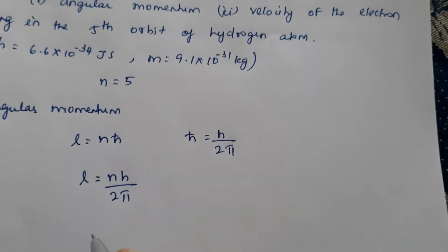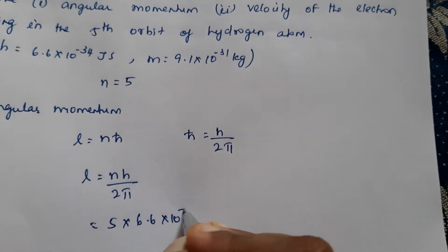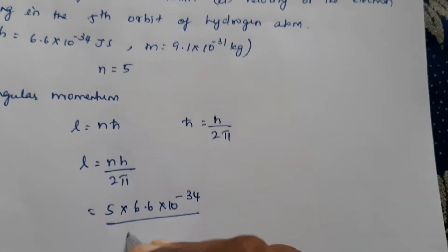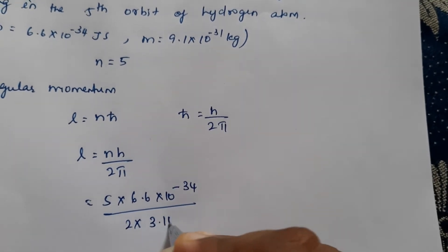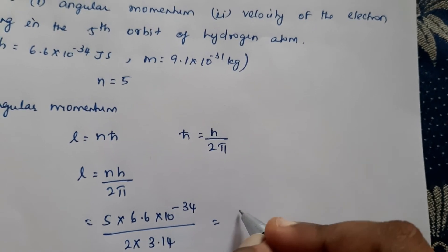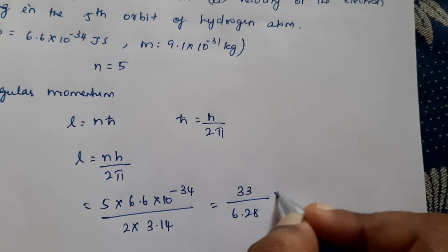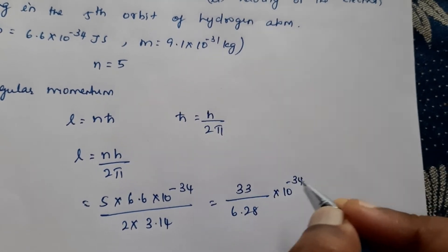So now we will go for substitution. 5 into 6.6 into 10 raised to minus 34 divided by 2 into 3.14. Now this can be written as 5 into 6.6 is 33 divided by 6.28 into 10 raised to minus 34.